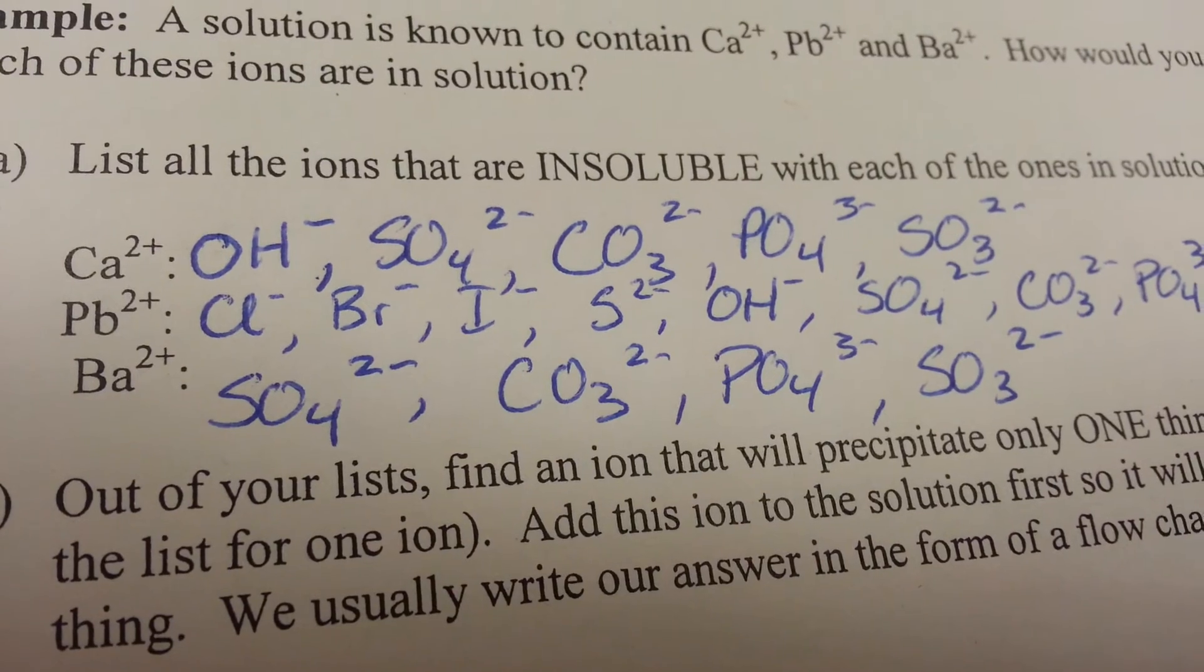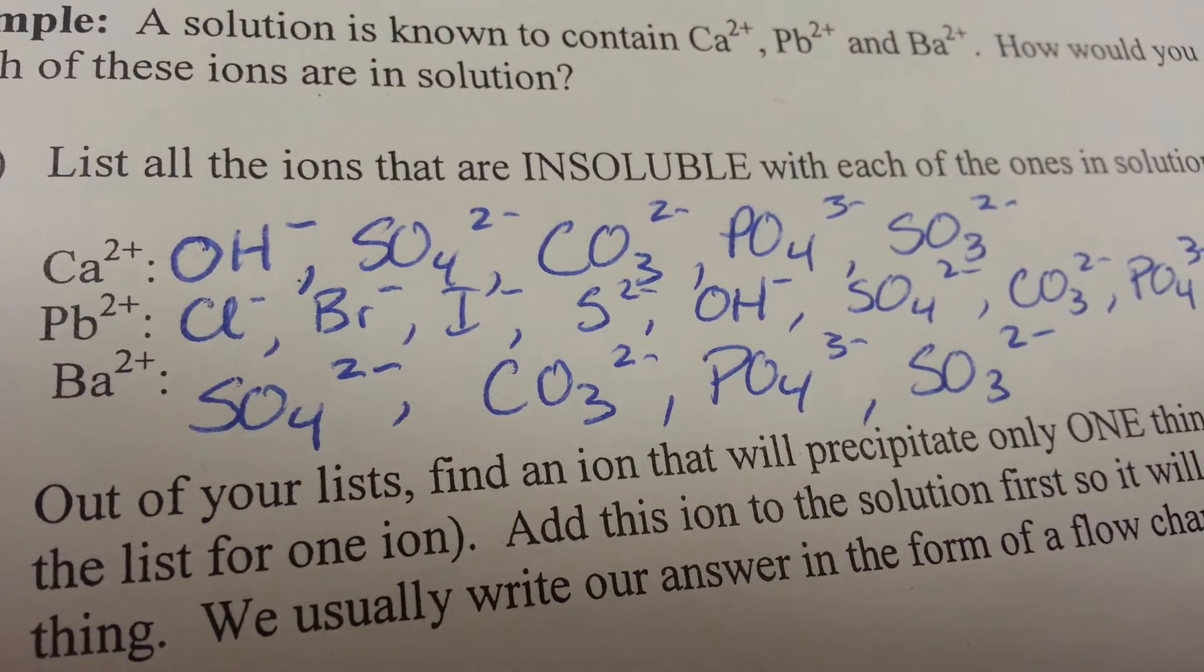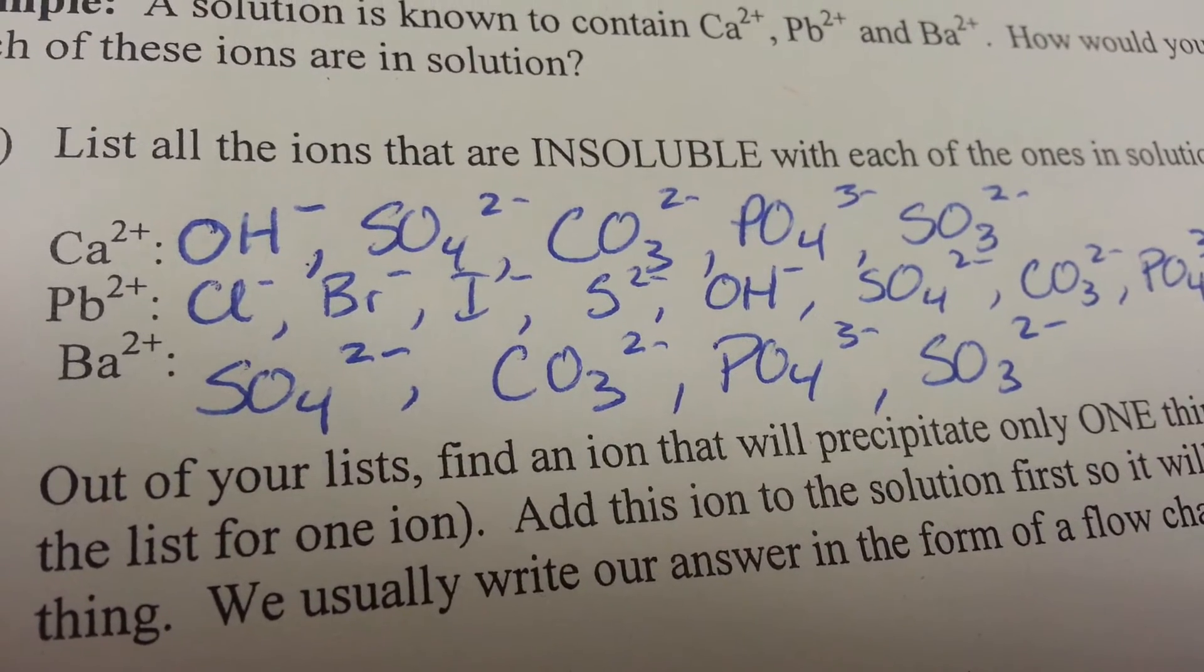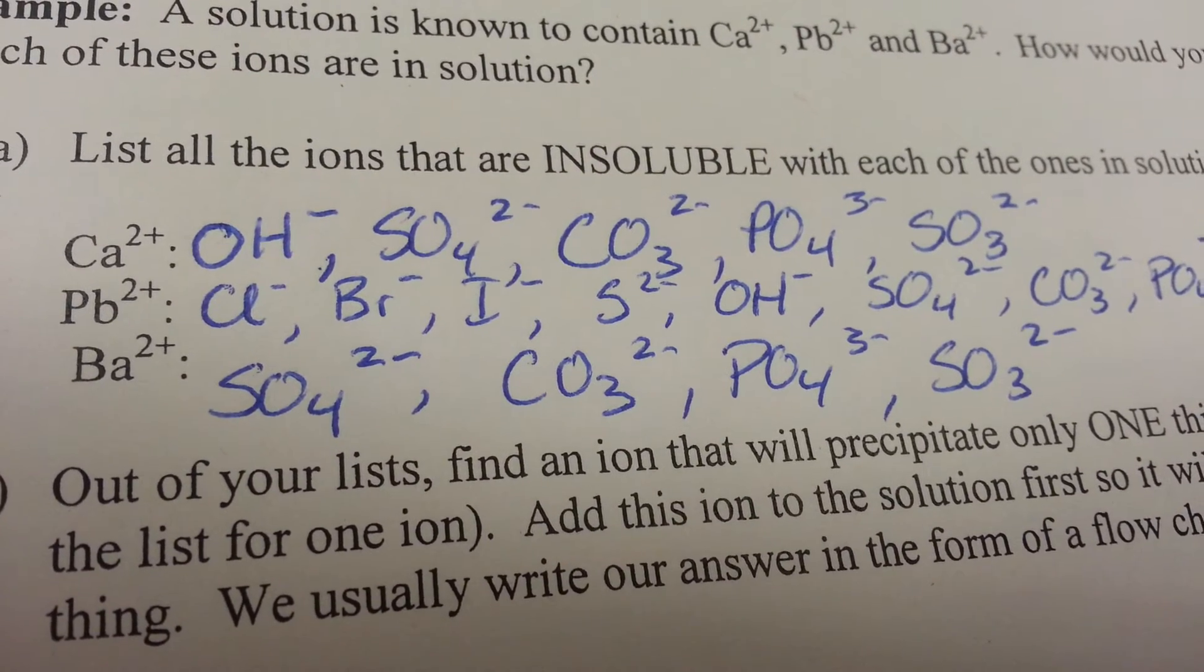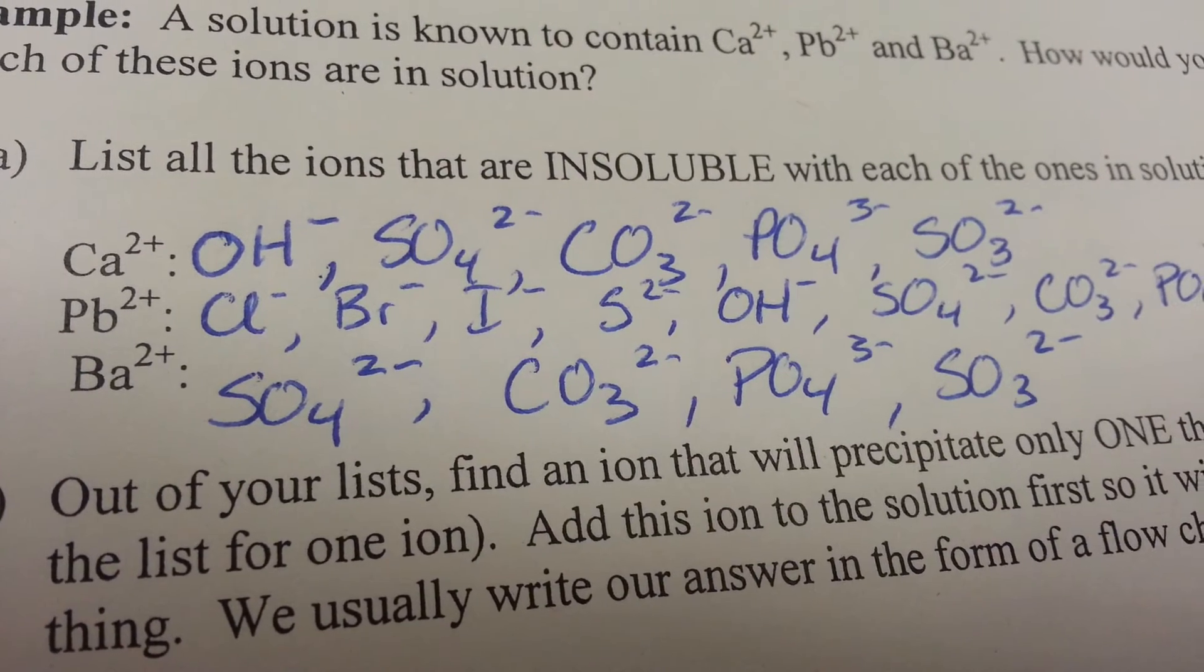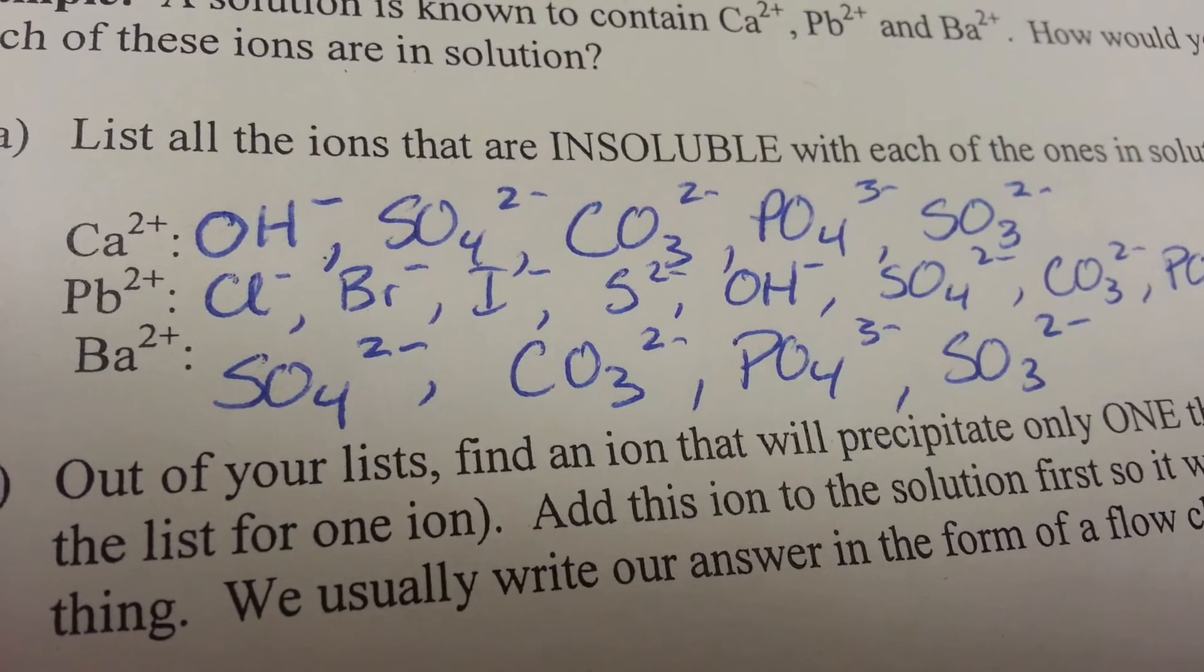And here I have completed it for the barium as well. The sulfate, the carbonate, the phosphate, and the sulfite. Some people might be a little bit concerned in the fact that sulfite is not part of that list. But remember, barium is a group two metal.